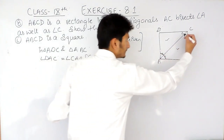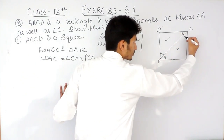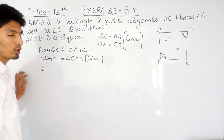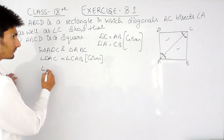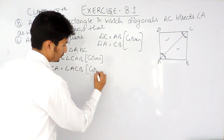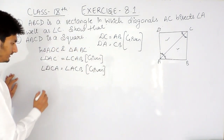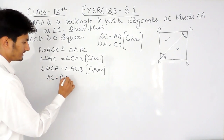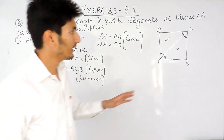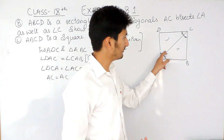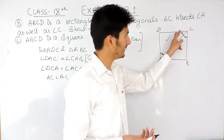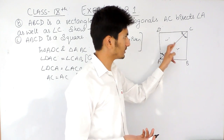Similarly, this angle of triangle ADC is equal to this angle of triangle ABC — this is again given because AC is also bisecting angle C. So angle DCA is equal to angle ACB. And for the third condition, AC is equal to AC, as it is the common side for both triangles.